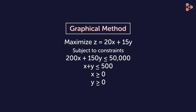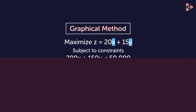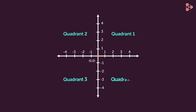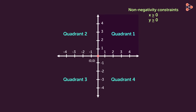To solve a linear inequality with two variables on a graph, we will use a coordinate plane. We know that there are four quadrants in a coordinate plane. As the decision variables in a linear programming problem should satisfy the non-negativity constraint, the values of x and y should not be less than zero. It means they will lie in the first quadrant only. Therefore, to solve these problems on a graph, we need to use only this quadrant.